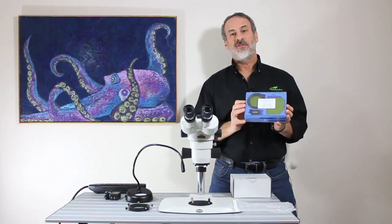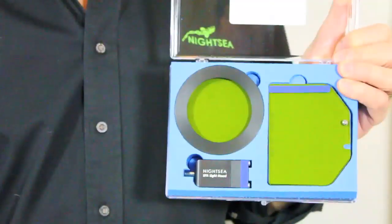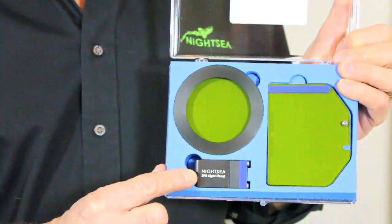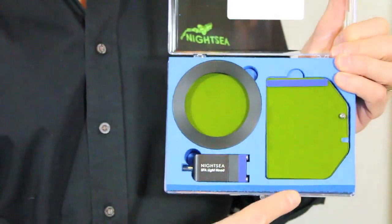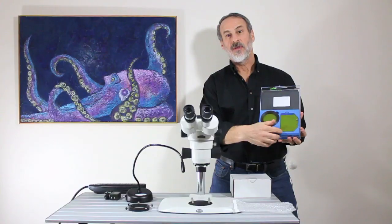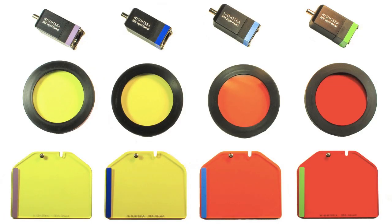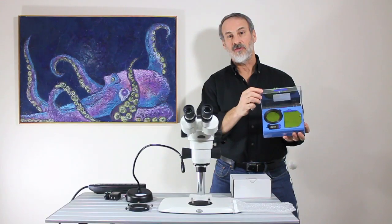And what we call the light and filter set. This consists of a high intensity LED light head module, a matched barrier filter, and a filter shield made out of the same material. We have different wavelength combinations for work with different fluorescent colors.